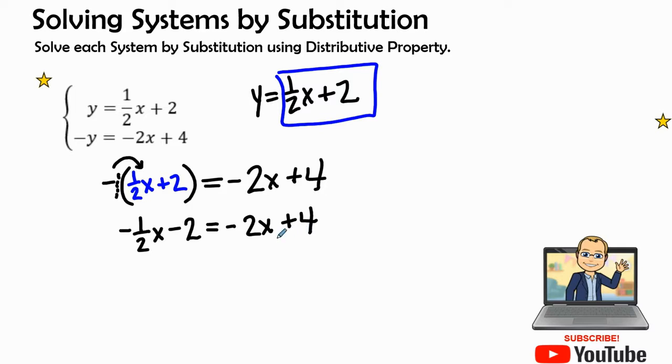Now we're just solving a regular equation with variables on both sides. Let's add 2x to both sides. That gives me 0, and now I would have 2 minus 1 half is 1 and 1 half. 1 and 1 half can be written as an improper fraction of 3 over 2, so 3/2 x minus 2 equals 4.